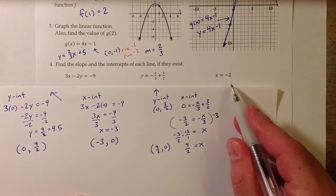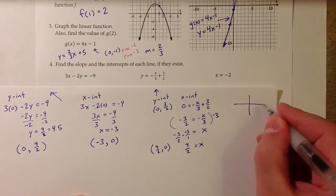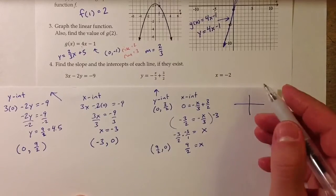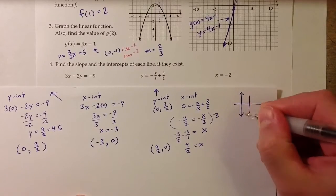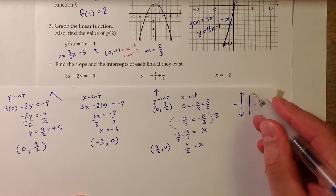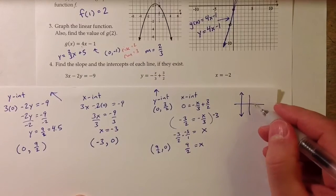For the last equation, x equals negative 2 is a special sort of line. It's a vertical line at negative 2. So it has no y-intercept, because the y-axis is also a vertical line, so these two are parallel and never intersect.